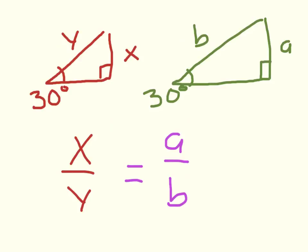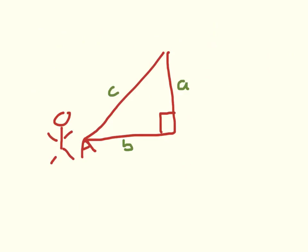It doesn't matter how big that 30-degree angle triangle is — the ratios we talk about will be the same. Those ratios depend on the angle, so we have to pick which angle we're going to stand at to actually define the ratios. We're going to learn to reference them in some different words. C is always the hypotenuse — the long side is always the hypotenuse.